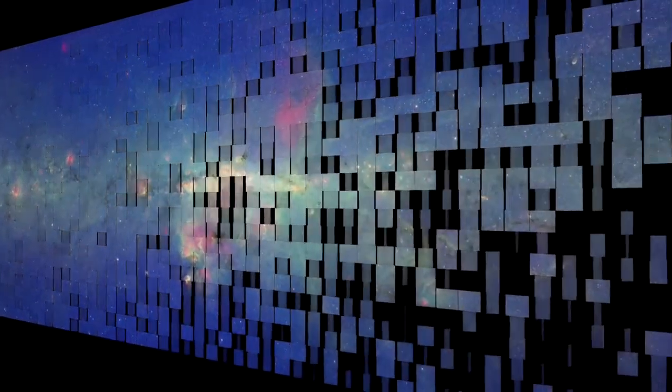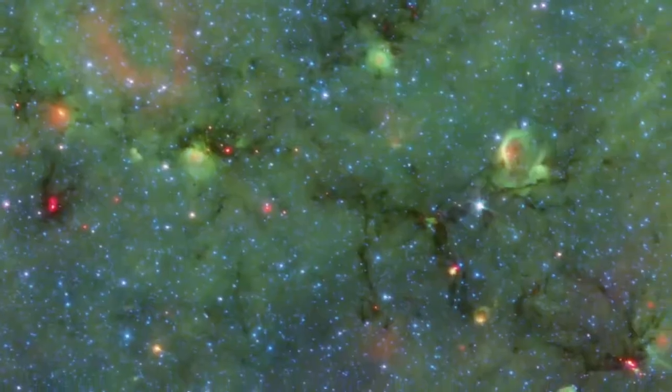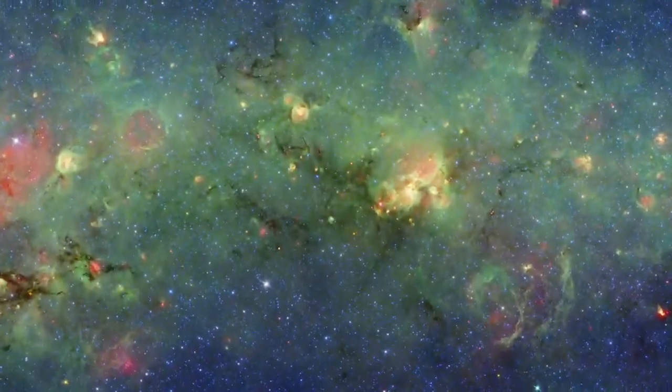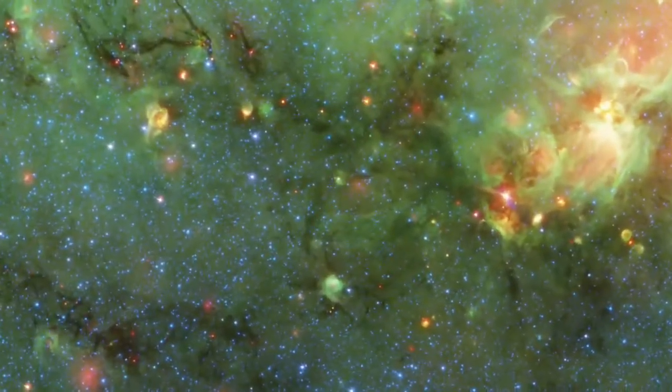It's the Milky Way as you've never seen it before. Two and a half billion infrared pixels are exposing our own galaxy in this new image from NASA's Spitzer Space Telescope.